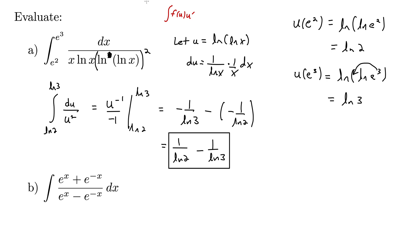Now let's look at Part B. We have the integral of e to the x plus e to the negative x, over the quantity e to the x minus e to the negative x, dx. We're essentially looking for a u and a du within this same integral. These will start to pop out at you the more of these you work — maybe pause the video and see if you can spot it.